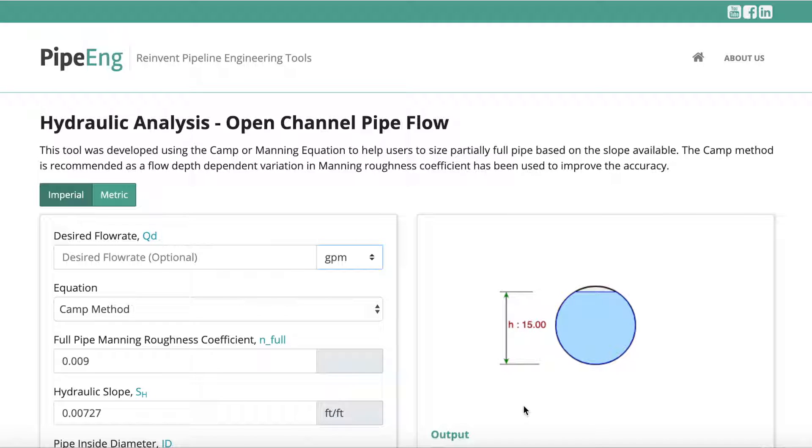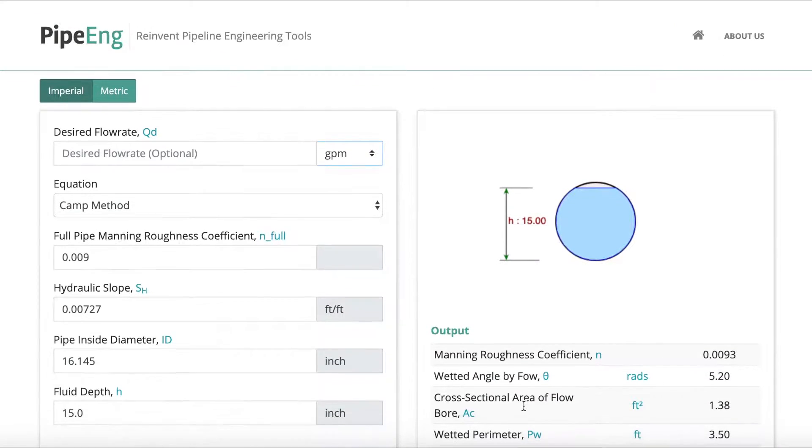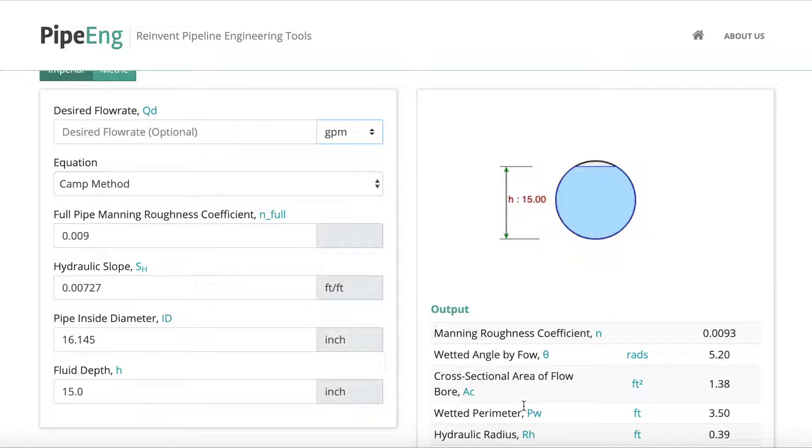Okay, let's take a look. So this tool can help you do two things. Either you have a pipeline installed in place, you know the slope, you know the size of the pipeline, but you would like to figure out the capacity. Or you don't have that pipeline but you know the design flow rate and slope available, and you would like to size the pipeline. Let's take a look at the first scenario.